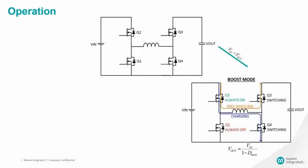When the input voltage is less than the output voltage, Q1 will be always off and Q2 will be always on. Q3 and Q4 will be switching. Now the topology changes to boost mode and steps up the input voltage.